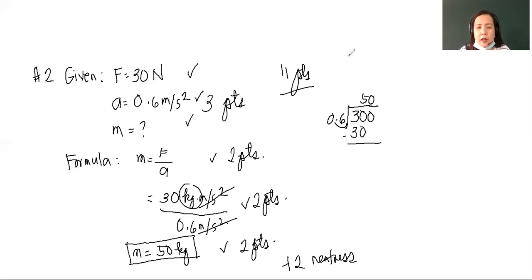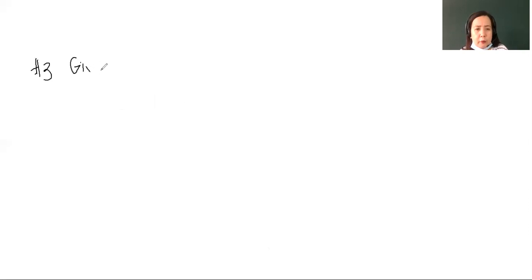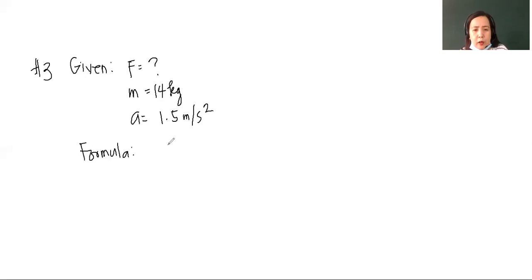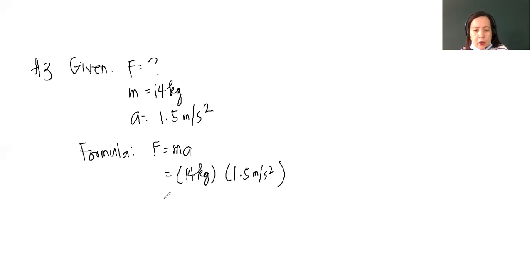Now let us proceed to number three. The given items: what net force acting on a 14 kilogram wagon produces an acceleration of 1.5 meter per second squared? The formula is of course the original formula: force is equal to mass times acceleration. Kindly substitute: mass is 14 kilograms times 1.5 meter per second squared.